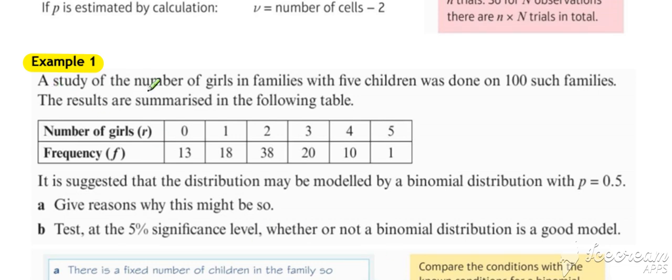So example one, a study of the number of girls in families with five children was done on 100 families. Results given in the table below. So these are our observed frequencies.